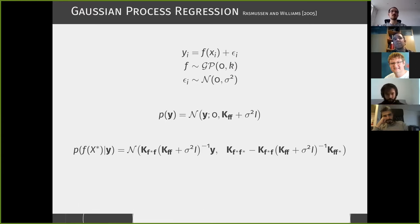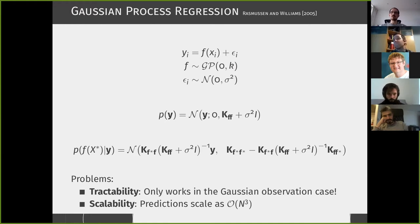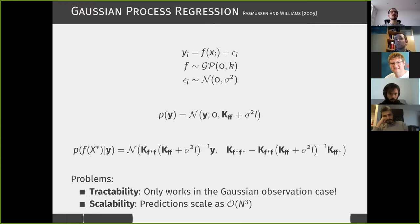There are two problems here: first, this closed-form solution only works with Gaussian observation noise. Second, there is the scalability issue. Approximate inference tries to tackle tractability, while sparse Gaussian processes have been introduced to tackle scalability.